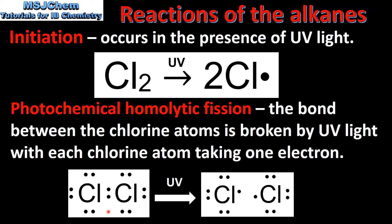Here we can see the Lewis structure of a chlorine molecule. In the presence of UV light, the single covalent bond between the two chlorine atoms breaks and each chlorine atom takes one electron from the bond. This produces two chlorine free radicals.